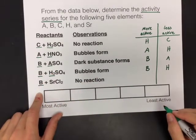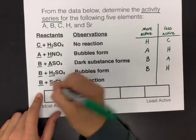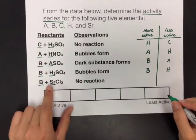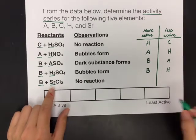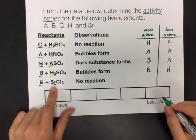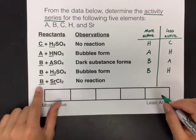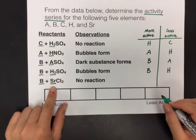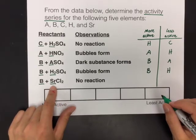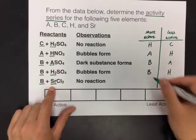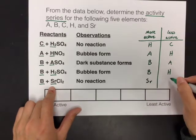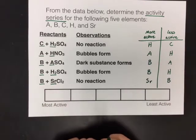And the last reaction given, B reacting with SrCl2. Again, B is trying to kick out Sr, which is a real element, but again, not important. There was no reaction. So who was stronger, B or Sr? Well, Sr was stronger because B was not able to kick it out. So in this case, Sr is more active, B is less active.